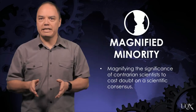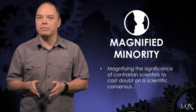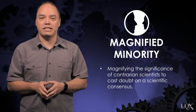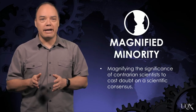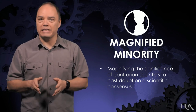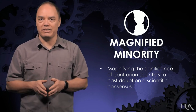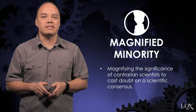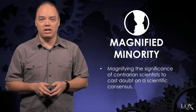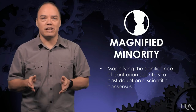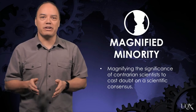The Petition Project also uses another misleading technique to cast doubt on the scientific consensus on global warming: magnified minority. This involves amplifying the significance of contrarian scientists in order to make it look like there is more scientific disagreement than in reality. While 31,000 science graduates sounds like a lot, there are millions of Americans with a science degree. The Petition Project amounts to less than 1% of American science graduates.